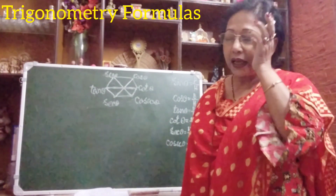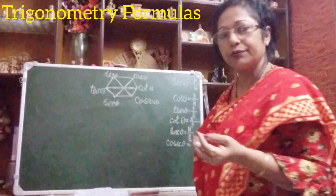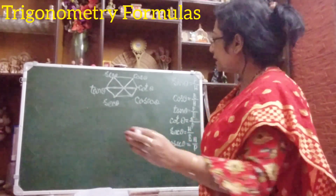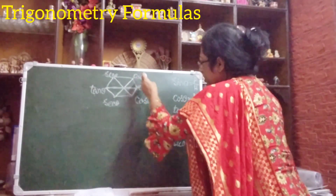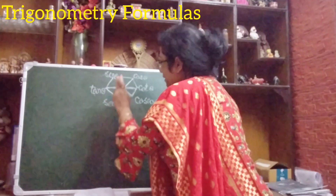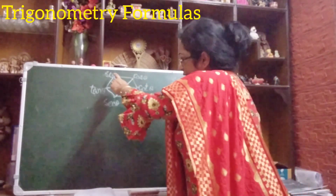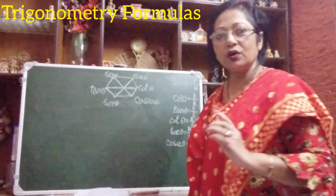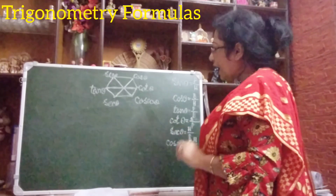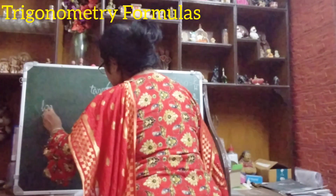To remember where to place which function: starting from the top-left, we begin with sin theta. On one side all the 'C' functions come — cos theta, cot theta, cosec theta. On the other side: sin theta, tan theta, sec theta — and in the alphabet order S, T, S helps you remember. This way you can place all the trig functions correctly on the hexagon.